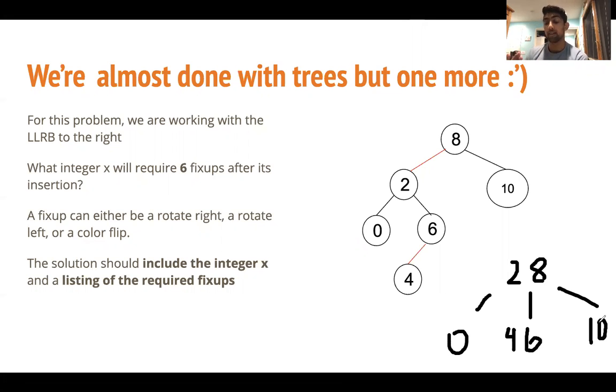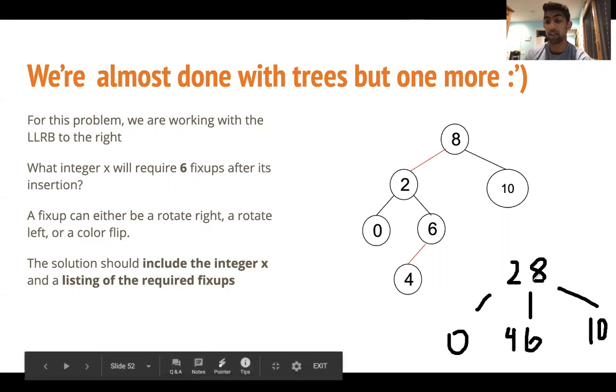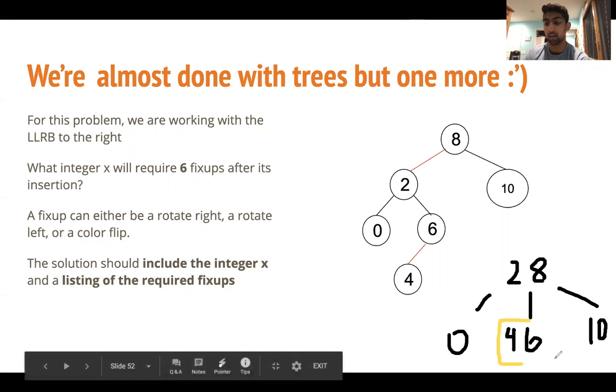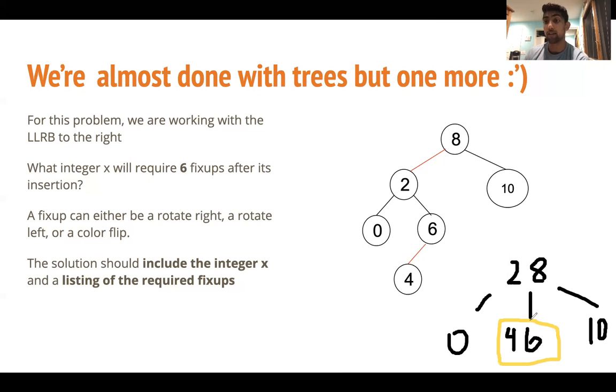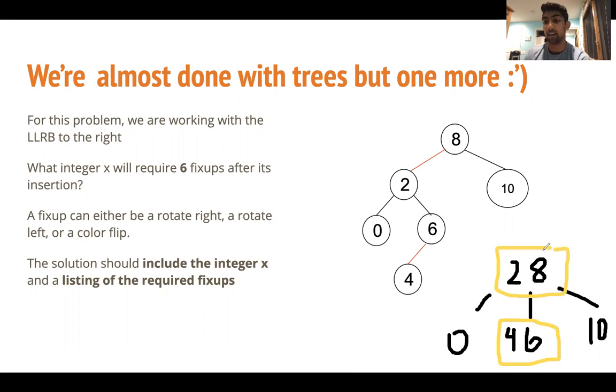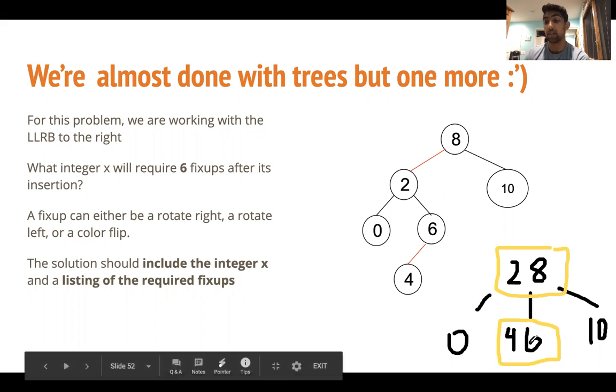So if we want to maximize the amount of effort or work that we do in this 2-3 tree upon an insertion, it would make the most sense to overstuff this 4-6 node. Because if we overstuff this 4-6 node, either by adding a 3, 5, or 7, what will happen is it will send the median element to this root node, which will then get overstuffed. And what will happen is we will need to split the root node as well. So you can see if we insert a 3, 5, or 7, we'll do a lot of work because we need to split the 4-6 node and the 2-8 node.